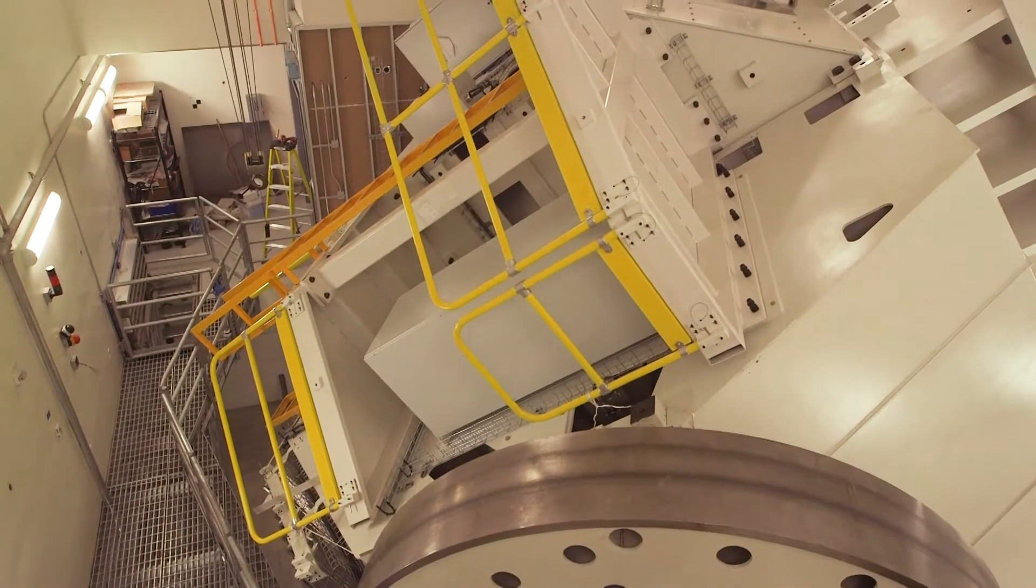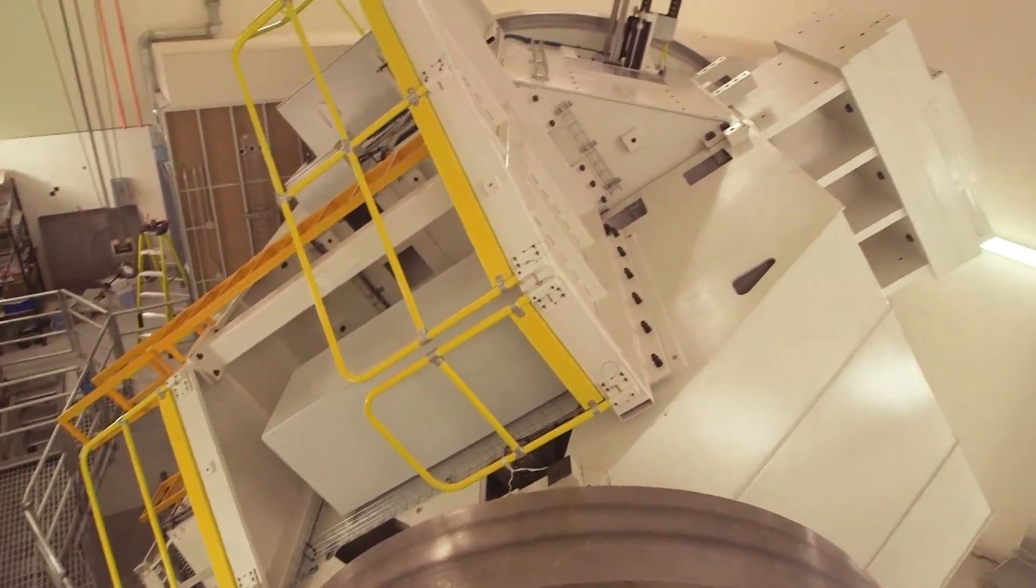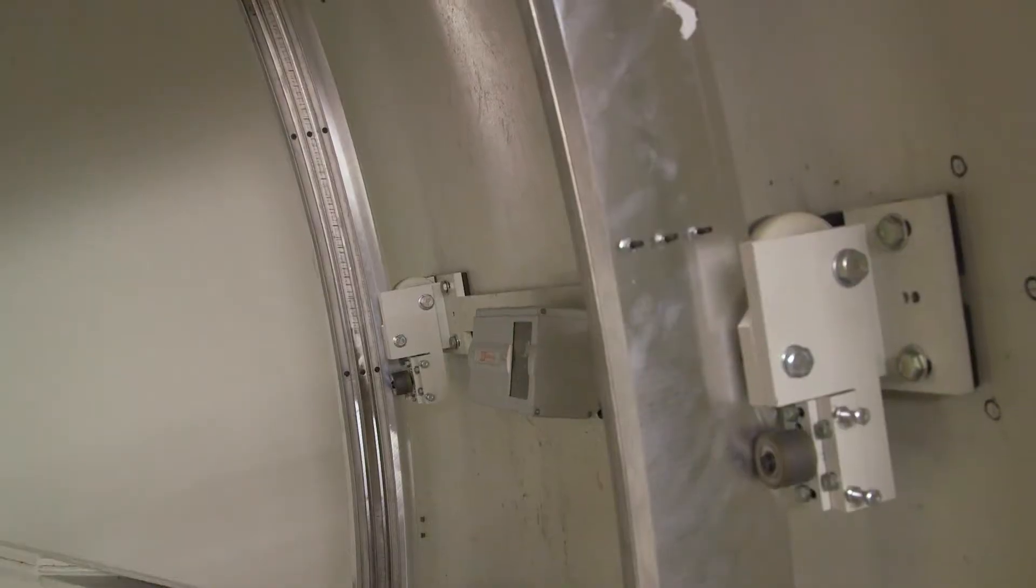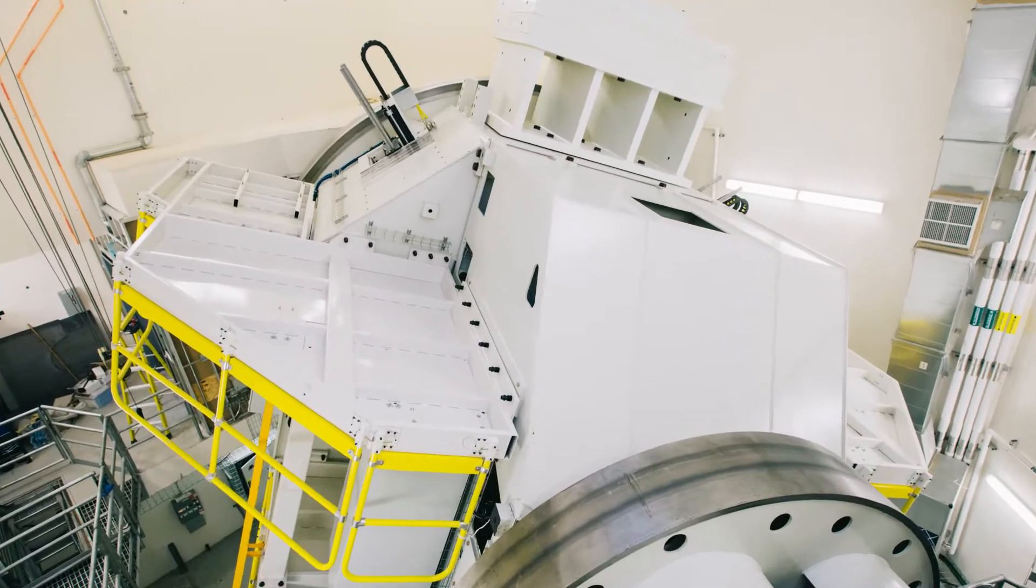Each patient treatment room is structured around this massive steel structure called a gantry. It weighs 240 tons and can rotate around the patient so that the proton beam can be angled with great accuracy directly to the tumor site.